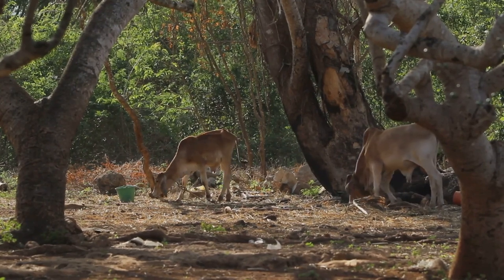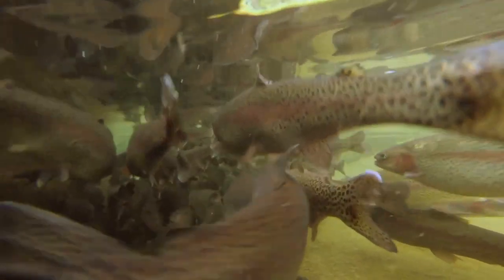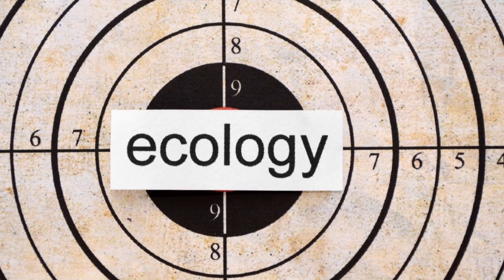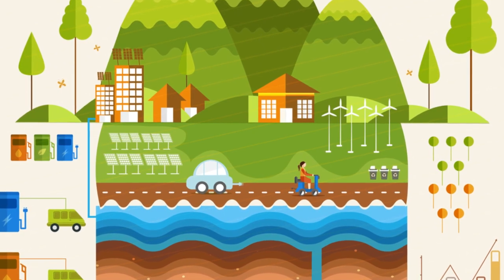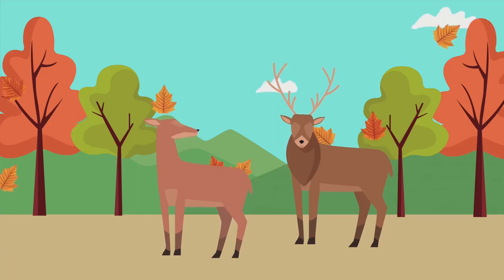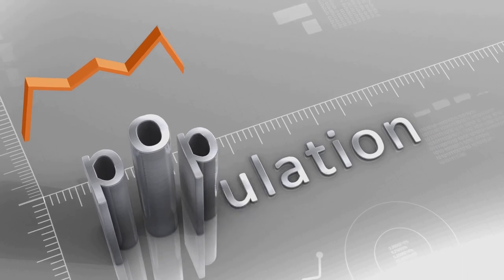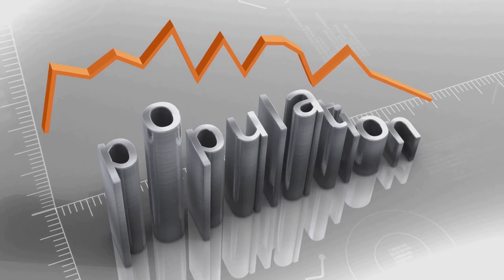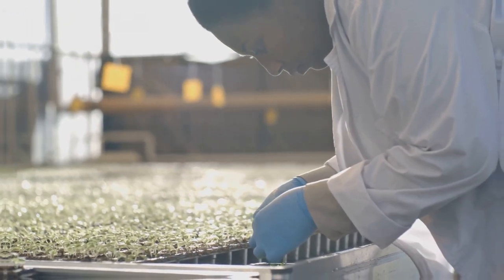Carrying capacity, denoted as K in the logistic growth model, represents the maximum population size that an environment can sustain indefinitely. It is a pivotal concept in ecology, as it defines the upper limit of population growth based on resource availability. Examples like the deer population in a forest or fish in a lake illustrate carrying capacities. When these populations exceed their carrying capacities, resources become overutilized, leading to population declines. Understanding and managing carrying capacities is essential for sustainable resource management and conservation efforts.